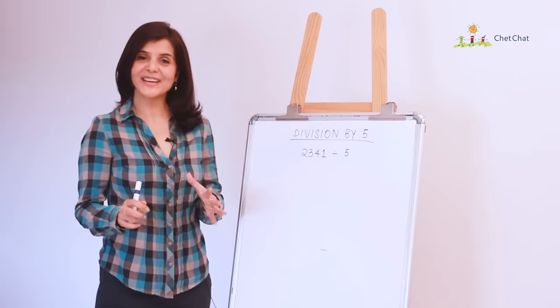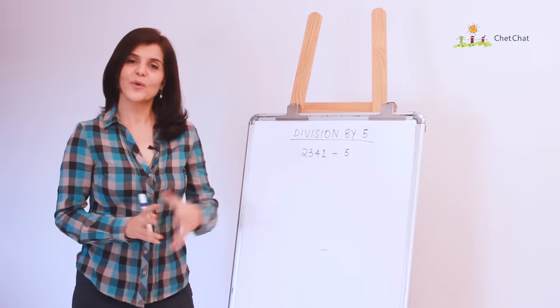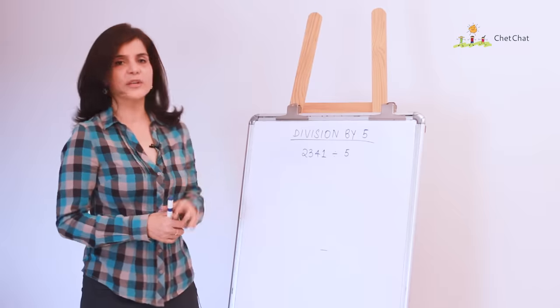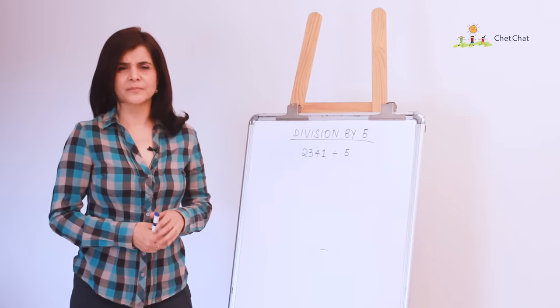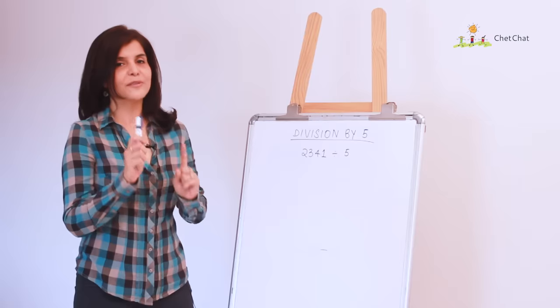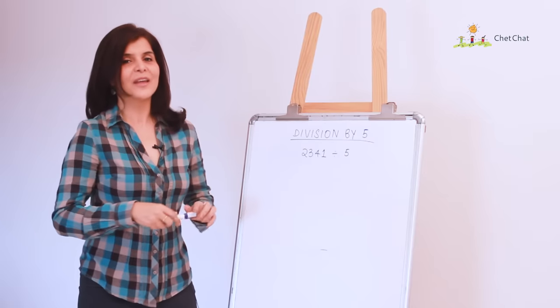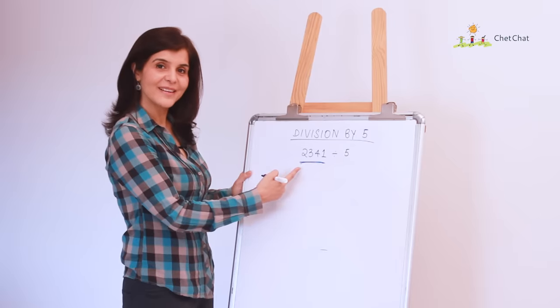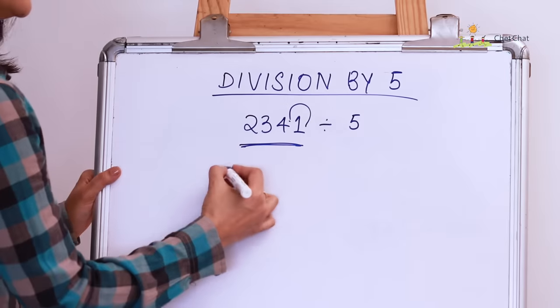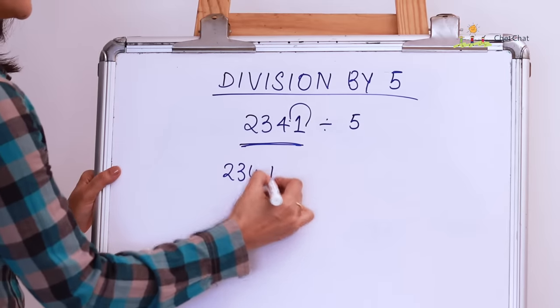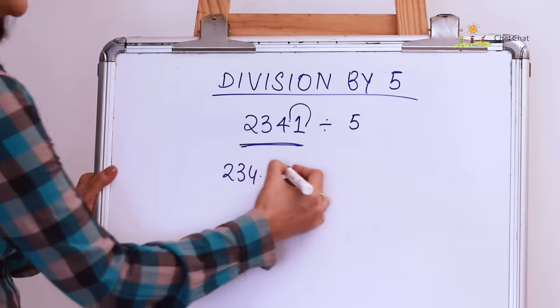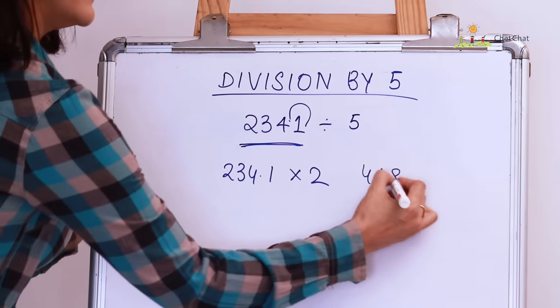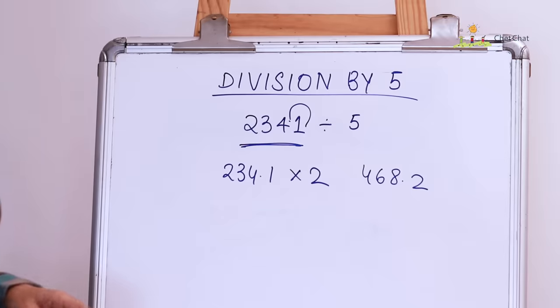Trick number 3, division by 5. What is 25 by 5? 5, that's easy. But what is 2341 by 5? Okay, let's remember 5 is 10 by 2. So, how about we first divide this by 10. So, 2341 divided by 10 is 234.1 and now I can multiply this by 2 and I've got 468.2. Wasn't that quick?